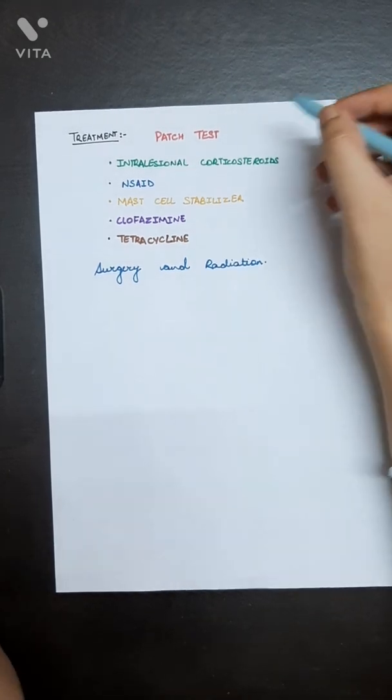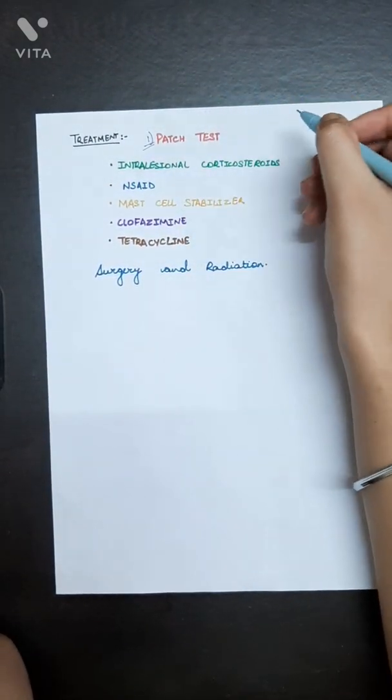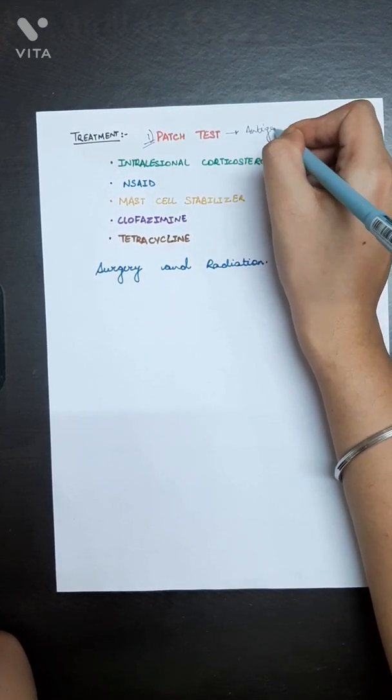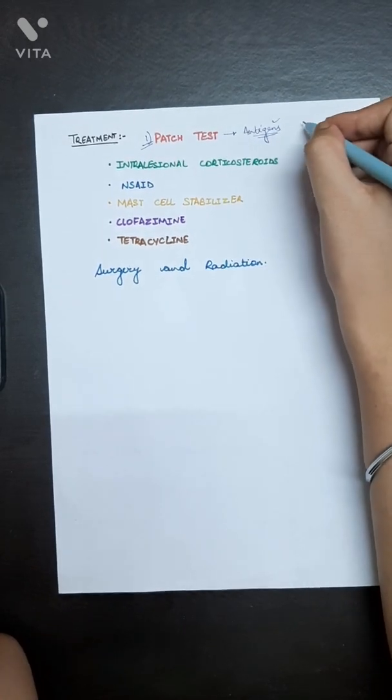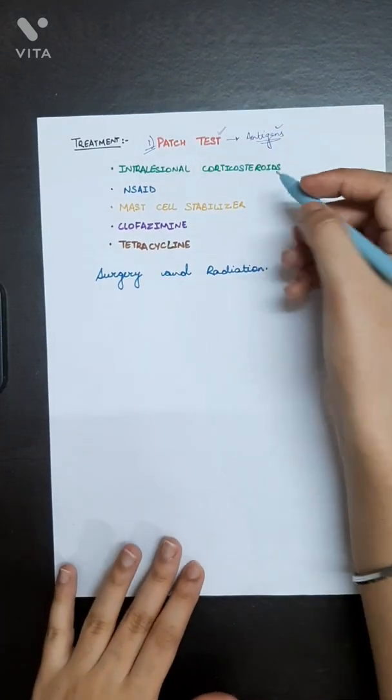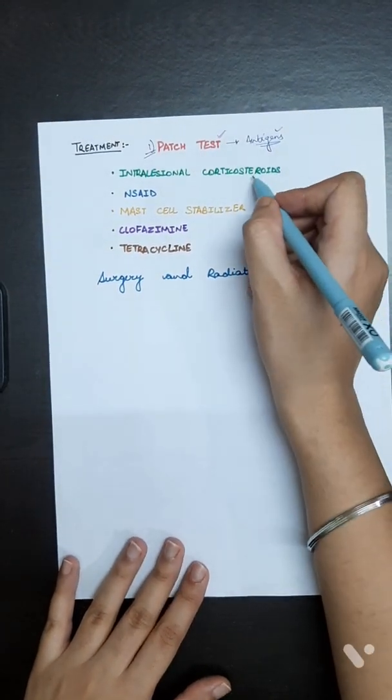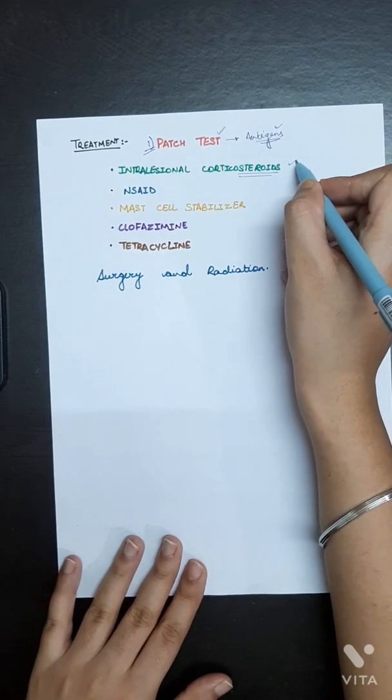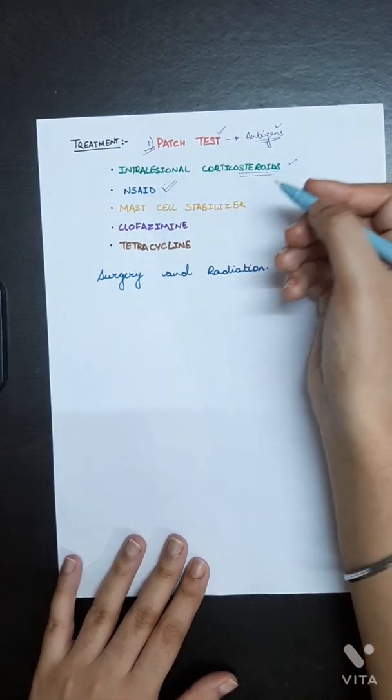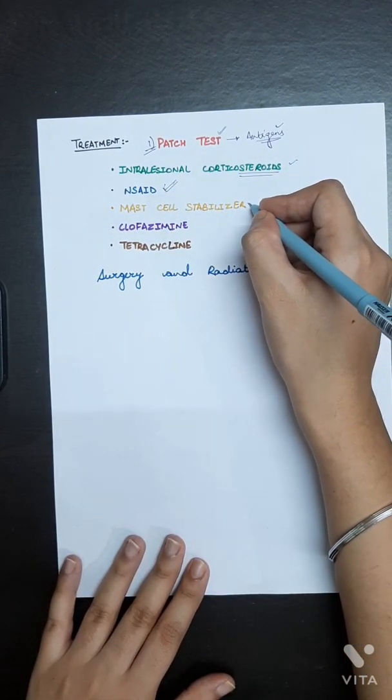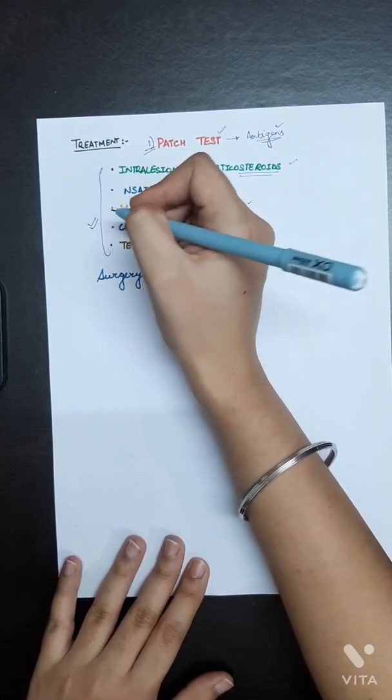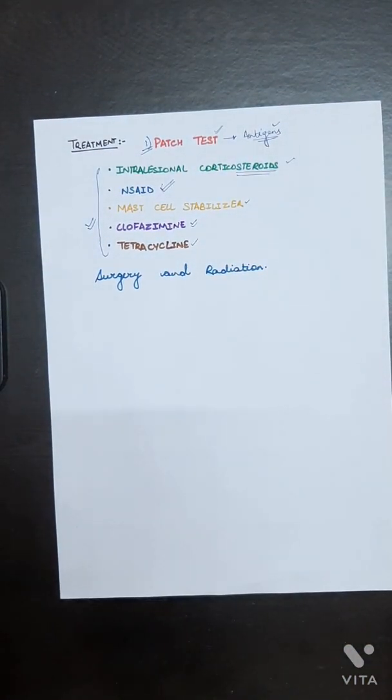Now the treatment. Firstly, the patch test should be done. As we know that this disorder occurs due to antigens, to rule out whether it is due to an antigen, to exclude that antigen, we should firstly perform that patch test. Intralesional corticosteroid injection can be given. Non-steroidal anti-inflammatory drugs are supposed to be given. Mast cell stabilizers, tetracyclines, clofazimine - these are the drugs that are supposed to be given in this disorder.